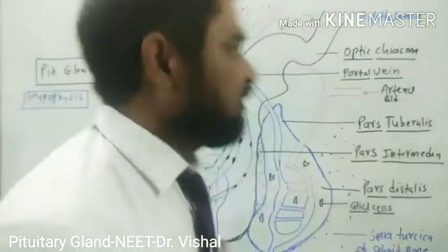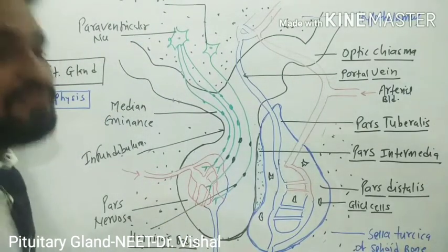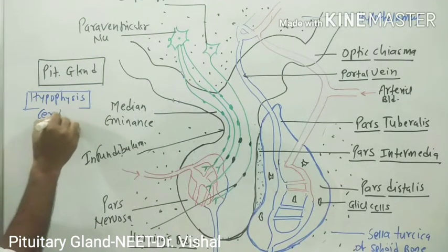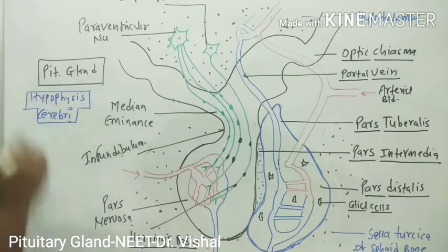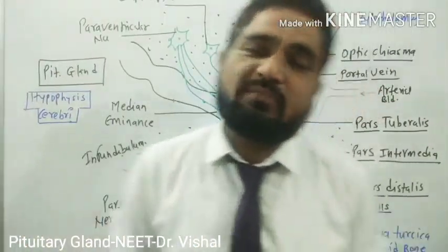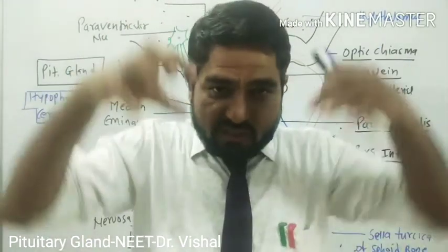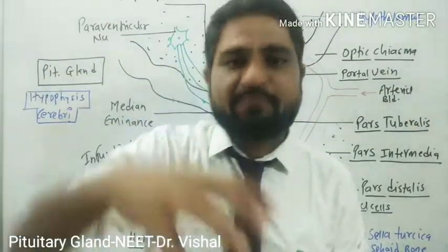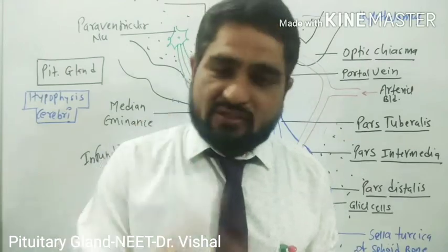In introduction, the pituitary gland is also called as hypophysis, or hypophysis cerebri. The pituitary is called the master endocrine gland of the body because it controls the functions of other endocrine glands. Now the exact location, size, structure, and internal histology are all really important about the pituitary gland.